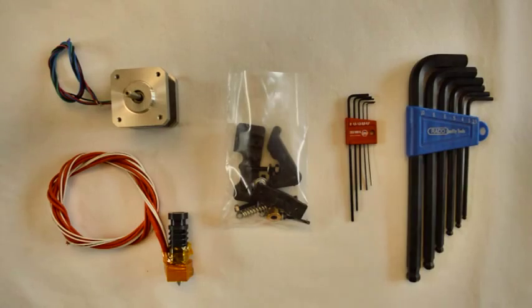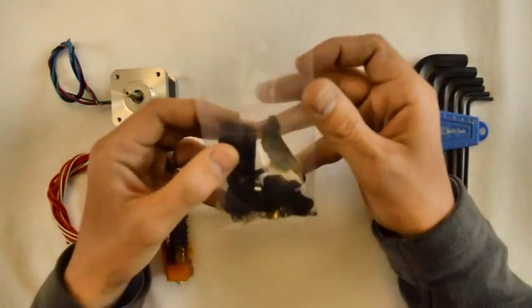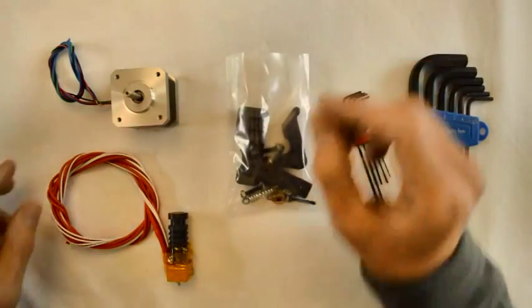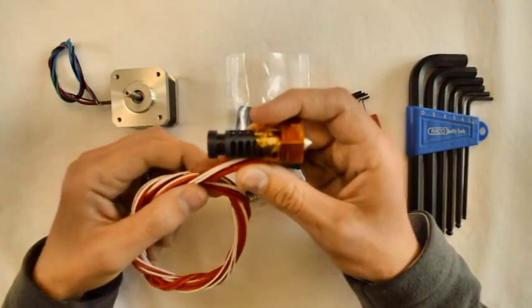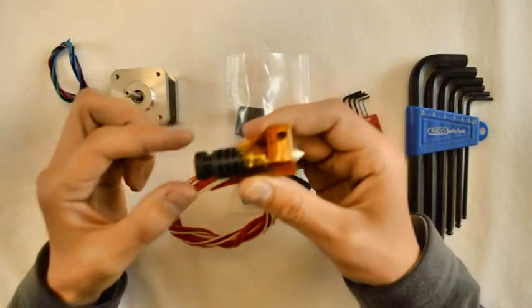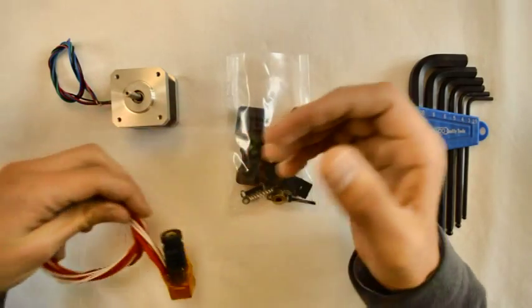What you'll need for this is the minimalist extruder kit. It will come in a bag like this. Then you'll need a hotend. You can use the jade, the all-metal hotend will also work like this. Basically any hotend with the interface as shown here will be suitable.